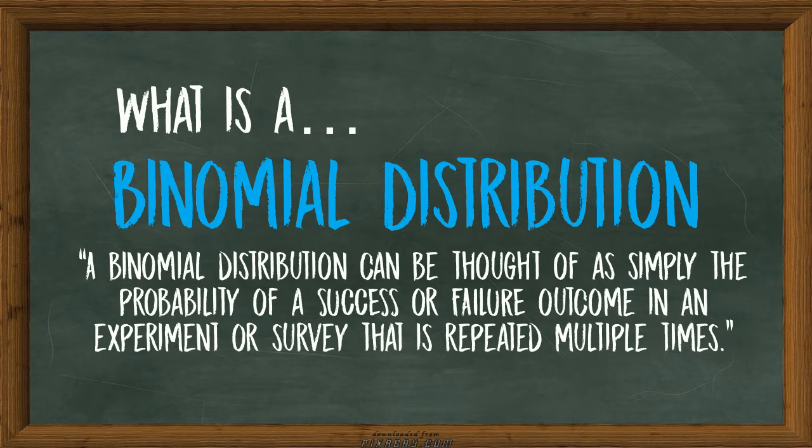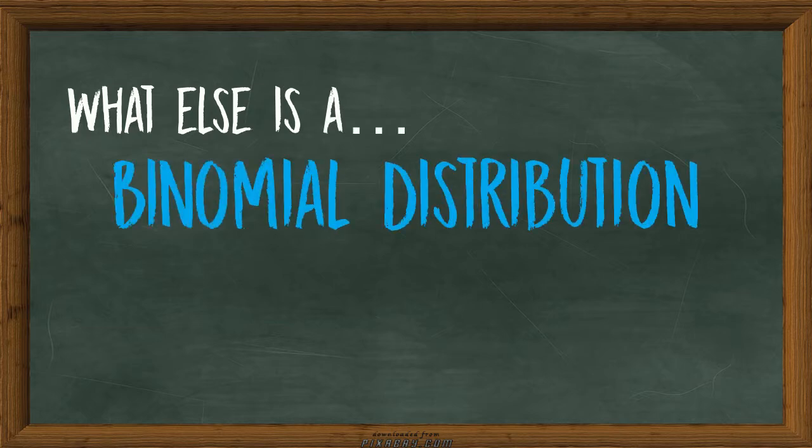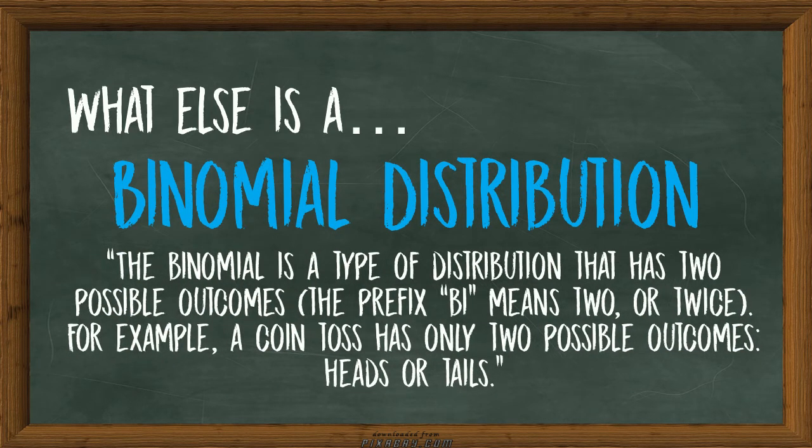What else is a binomial distribution? Well, it's also a type of distribution that has two possible outcomes. For example, a coin toss only has two possible outcomes like heads or tails.